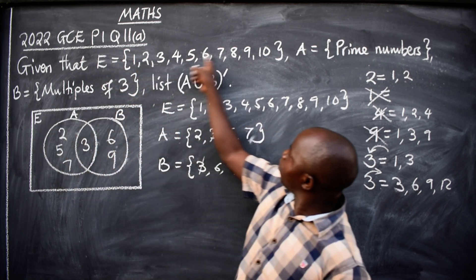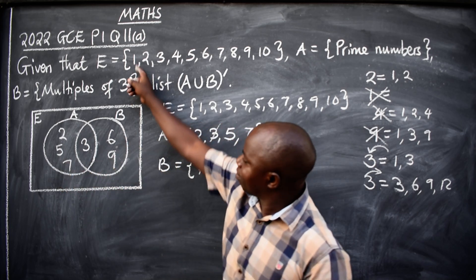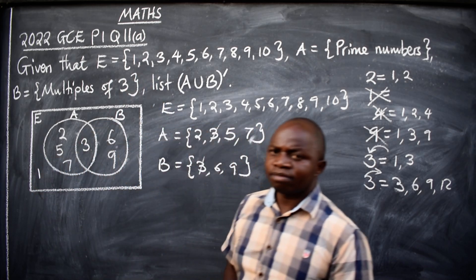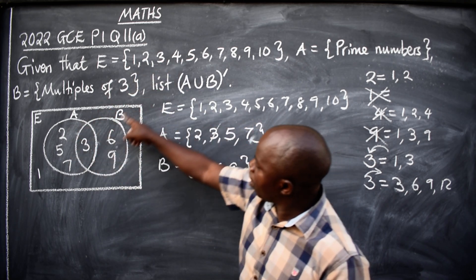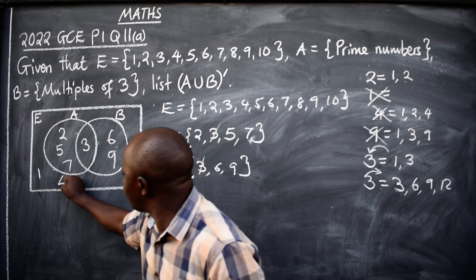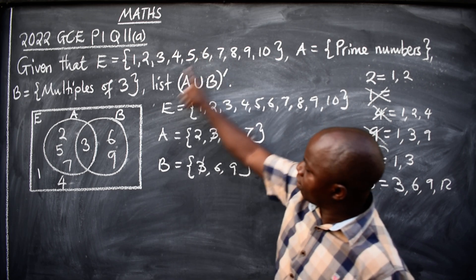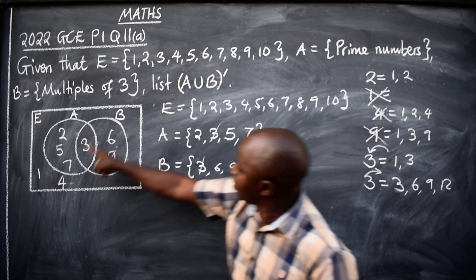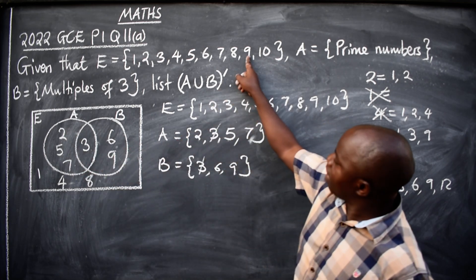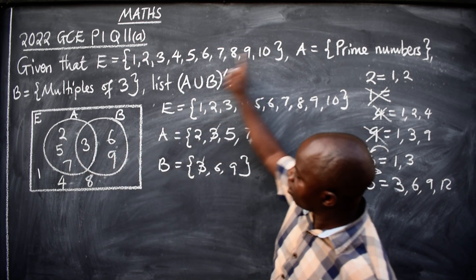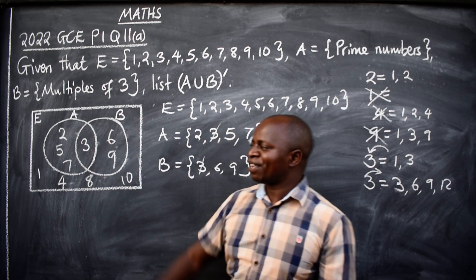Then come outside to the universal. Go back and check: what from the universal isn't in any set? One — yes. Four — we don't have it, so four goes outside. Five is already there. Six is there. Seven is there. Eight — we don't have eight, so eight goes outside. Nine is there. Ten — we don't have ten, so ten goes outside. So the outside elements are {1, 4, 8, 10}. This is the way the Venn diagram is supposed to be.